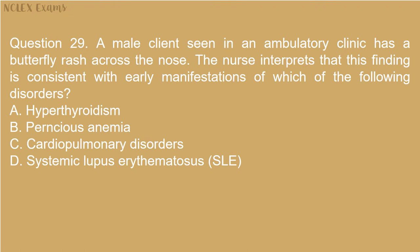Question 29. A male client seen in an ambulatory clinic has a butterfly rash across the nose. The nurse interprets that this finding is consistent with early manifestations of which of the following disorders? A. Hypothyroidism. B. Pernicious anemia. C. Cardiopulmonary disorders. D. Systemic lupus erythematosus (SLE).